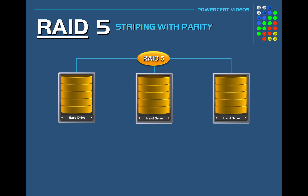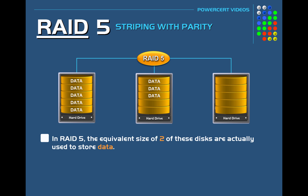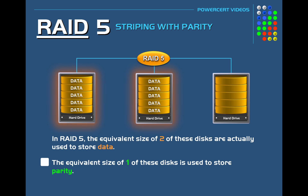In our example here, this setup is using three disks. Since it's using RAID 5, the equivalent size of two of these disks are actually used to store data, because it takes the equivalent of one entire disk to store parity. So if these disks were one terabyte each, three of them combined would equal three terabytes, but only two terabytes would be used for actual storage because one terabyte would be used to store parity.